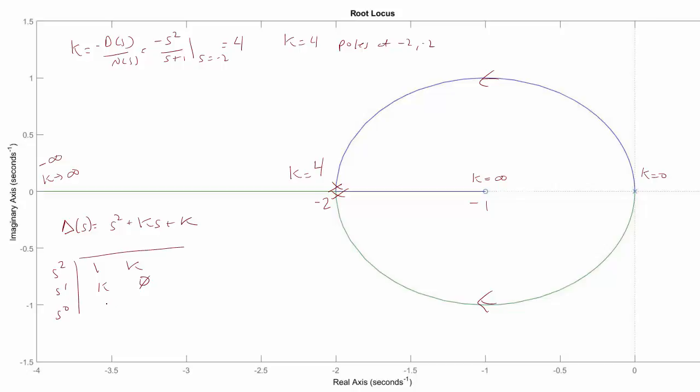And our final row is negative k squared over k, which equals k. So we know that as long as k is greater than 0, this system will be stable.